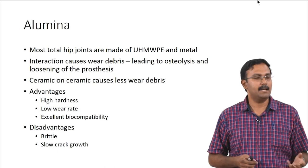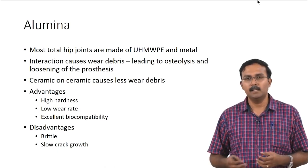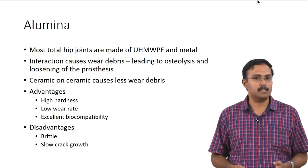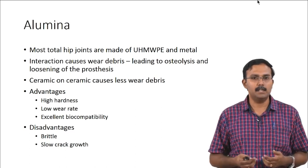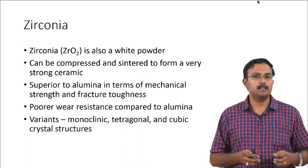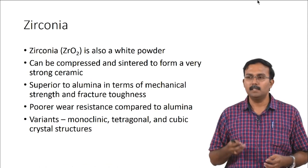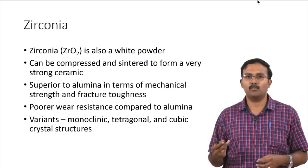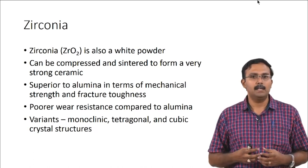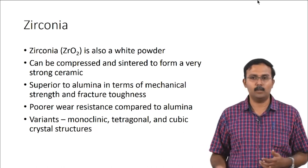The advantage of alumina is its very high hardness and very low wear rate, as well as excellent biocompatibility — it does not cause any inflammatory responses. The disadvantage is it is brittle and can cause cracks. Zirconia is another ceramic which is also a white powder that can be compressed and sintered to form a strong ceramic. Its mechanical strength is better than alumina and its fracture toughness is also better; however, it does not have the same wear resistance as alumina, causing more wear debris under friction.